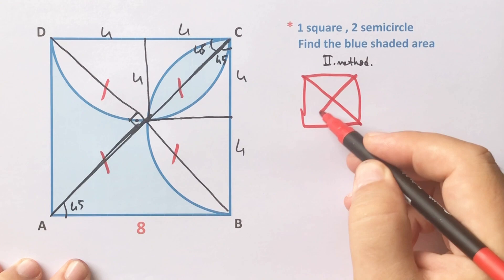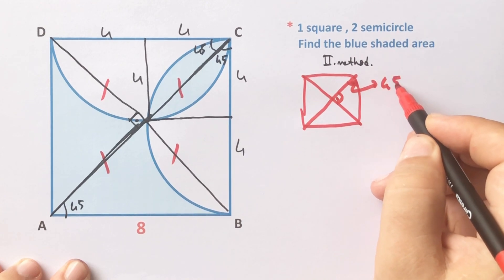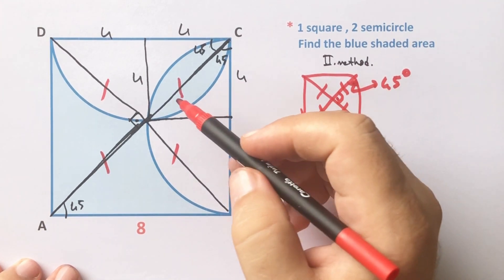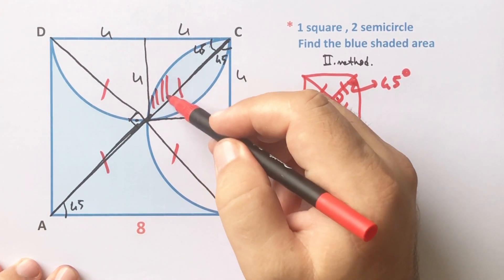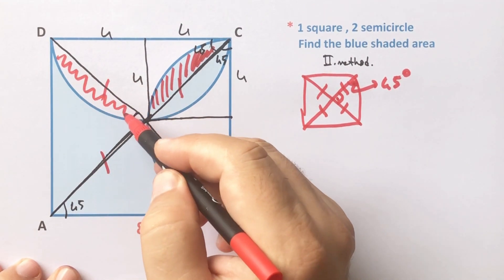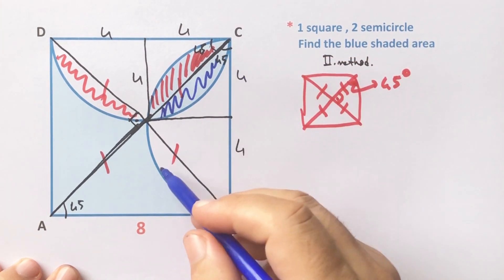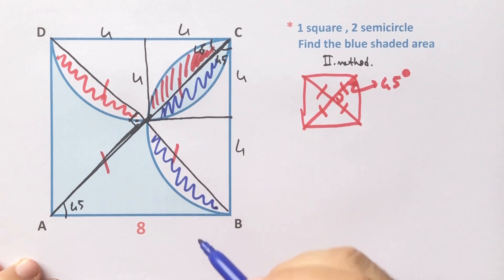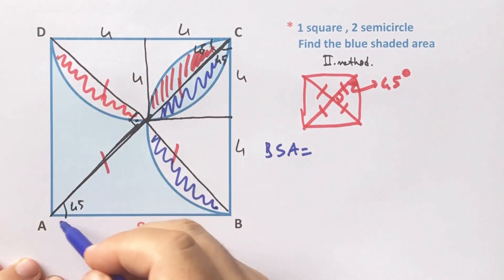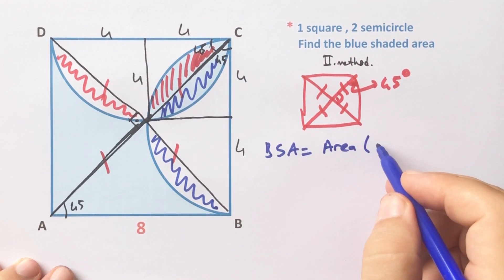Let me remind you: if you have a square, here must be 90 degrees and here is 45 degrees, so these four parts must be equal. Notice that this area and this area must be equal because they have the same chord. These two areas must also be equal because they have the same chord as well. Therefore this triangle area must equal the blue shaded area.